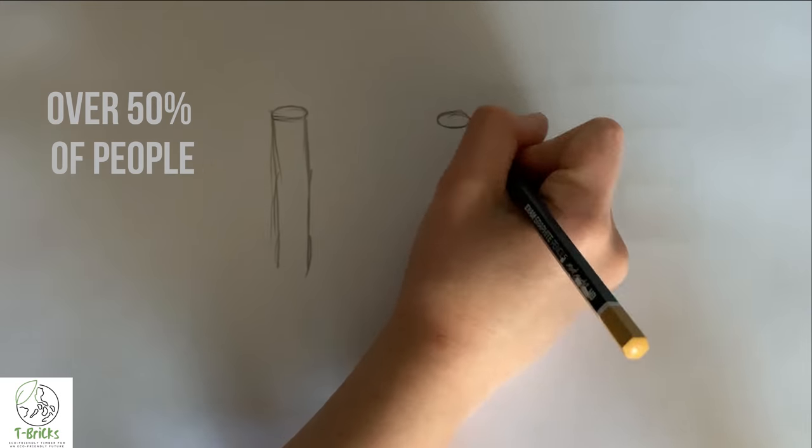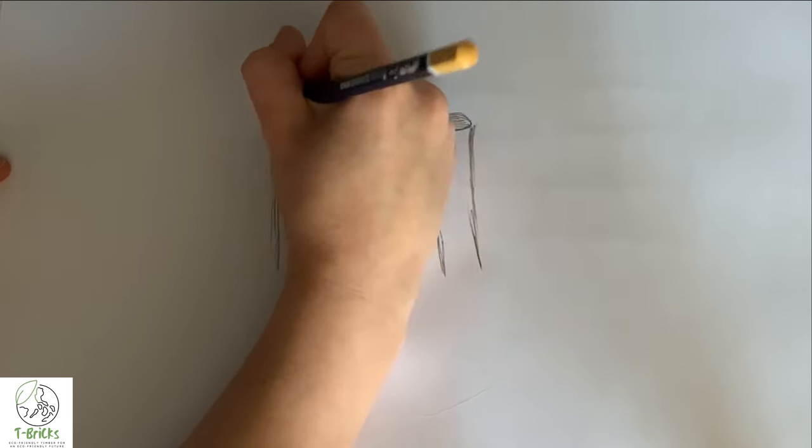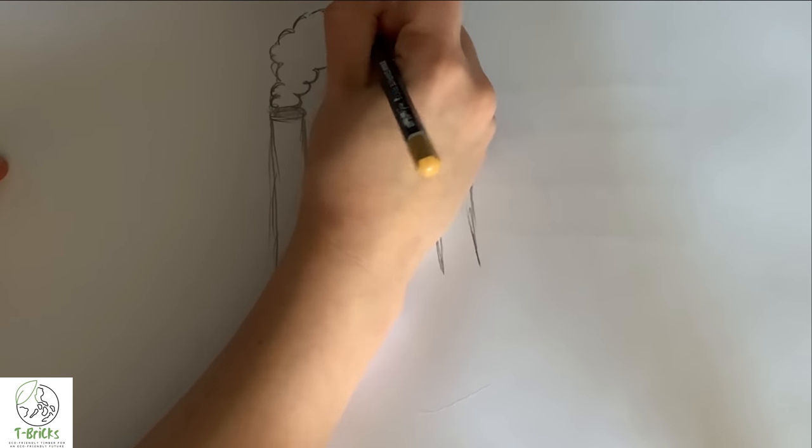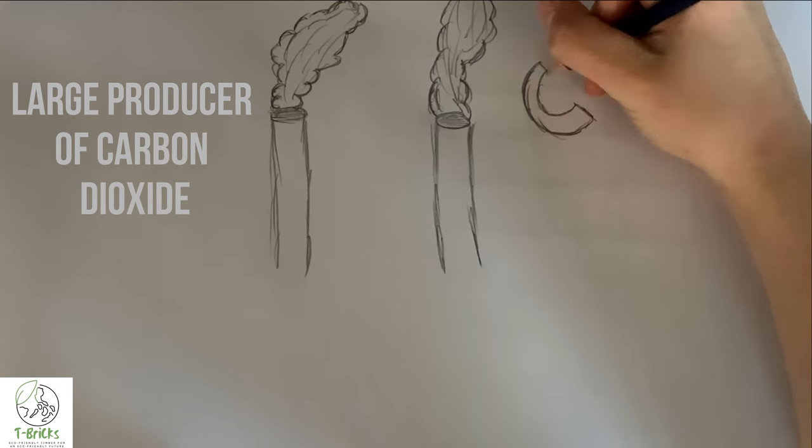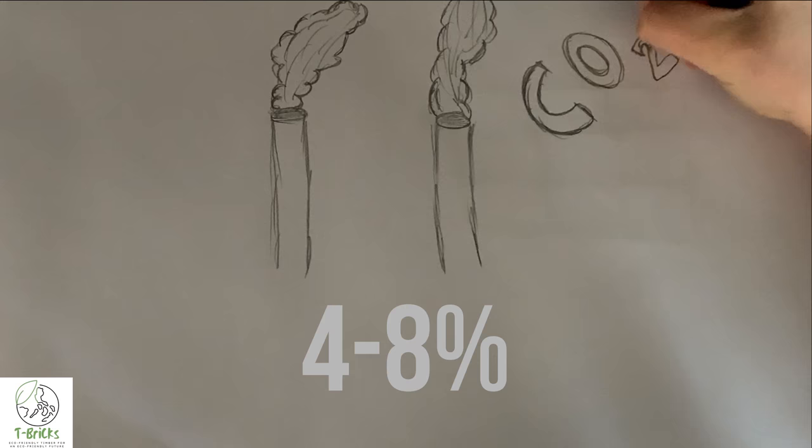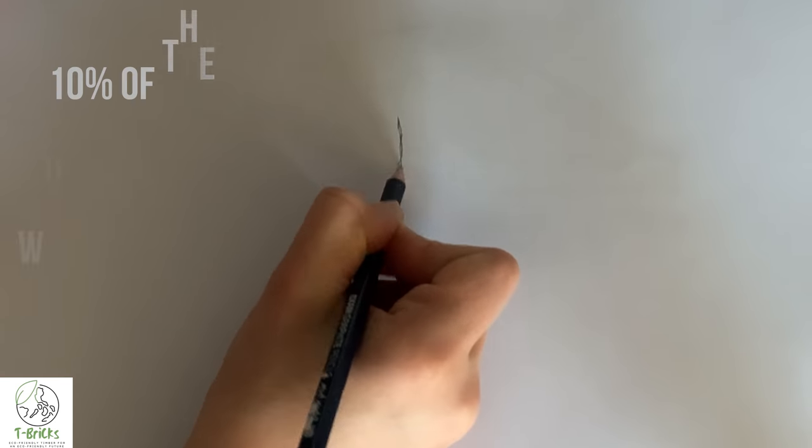The survey conducted for this report revealed that over 50% of people believed that concrete was a good building product for the environment. However, concrete manufacturing is a large producer of carbon dioxide, contributing 4-8% of the world's greenhouse gas emissions. Concrete also uses 10% of the world's water supply.